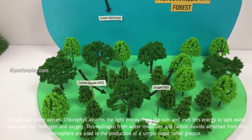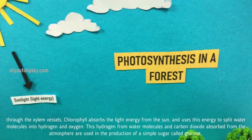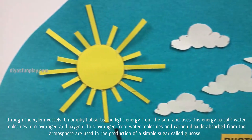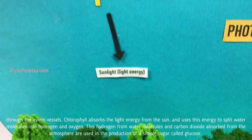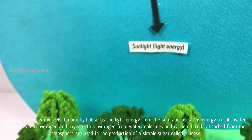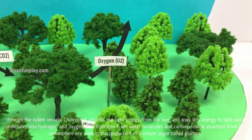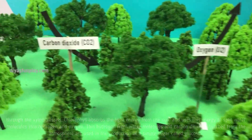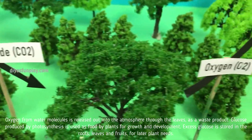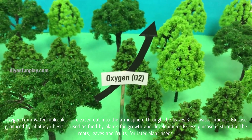Chlorophyll absorbs the light energy from the sun and uses this energy to split water molecules into hydrogen and oxygen. This hydrogen from water molecules and carbon dioxide absorbed from the atmosphere are used in the production of a simple sugar called glucose. Oxygen from water molecules is released out into the atmosphere through the leaves as a waste product.